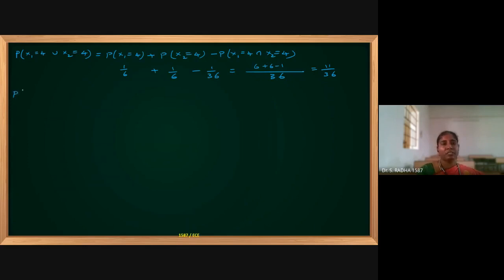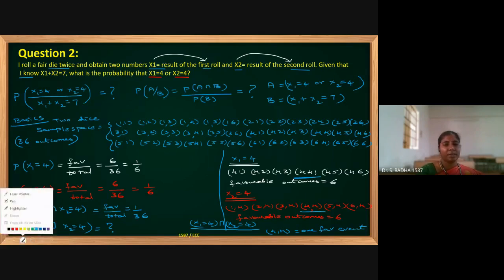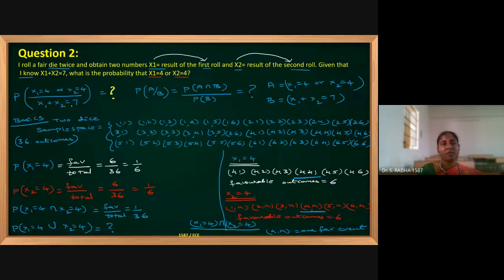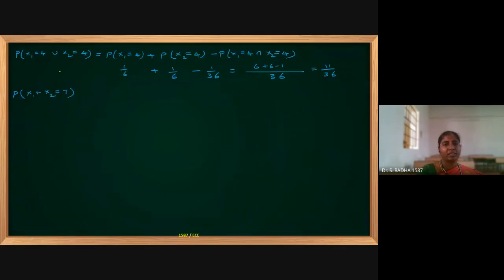Now we find the probability of event B: x1 plus x2 equals 7. The pairs that sum to 7 are: (3,4), (4,3), (5,2), (2,5), (6,1), (1,6) — six favorable outcomes. So probability of x1+x2=7 is 6/36, which equals 1/6.